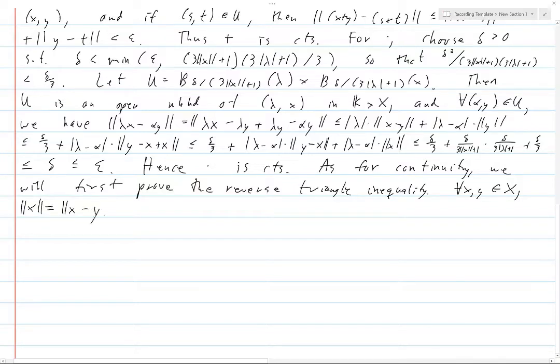So this is certainly x minus y plus y, which by triangle inequality gives us ||x|| less than or equal to ||x - y|| + ||y||. So if you bring the y over, ||x|| - ||y|| is less than or equal to ||x - y||.